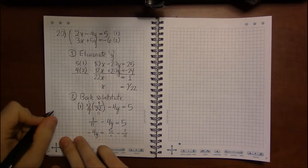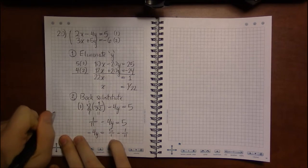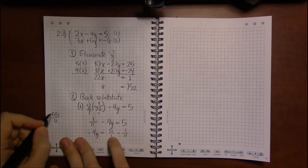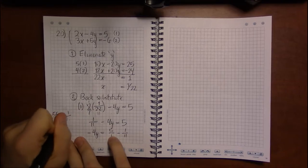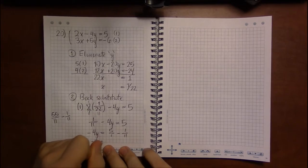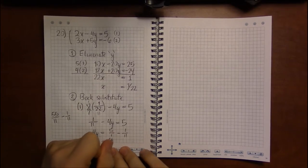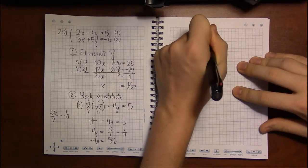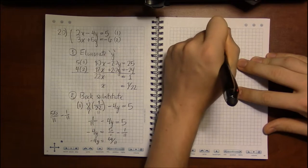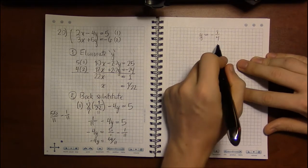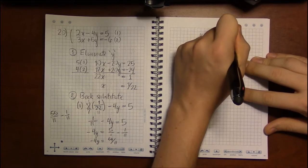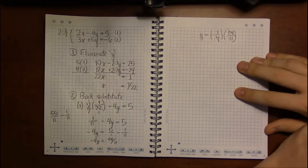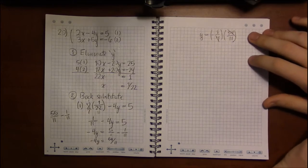Then I have minus 4y equals 5 over 1 minus 1 over 11. And doing a bit of scratch work here, the common denominator is 11. So multiplying top and bottom of 5 over 1 by 11, I'll get 55 over 11 minus 1 over 11. That will be 54 over 11. And then dividing by minus 4 is the same thing as multiplying by the reciprocal, by minus 1 over 4.